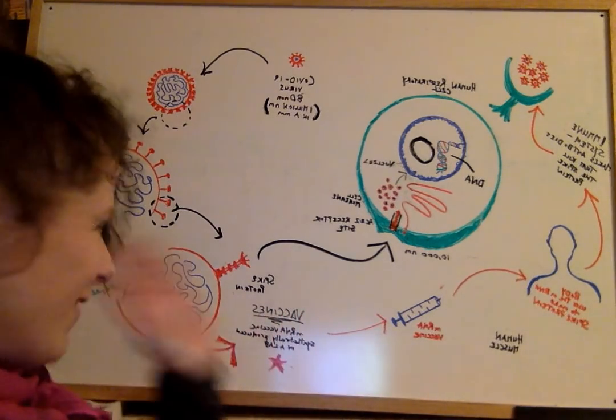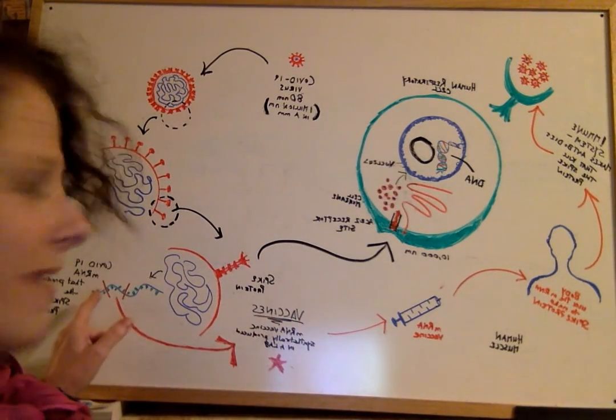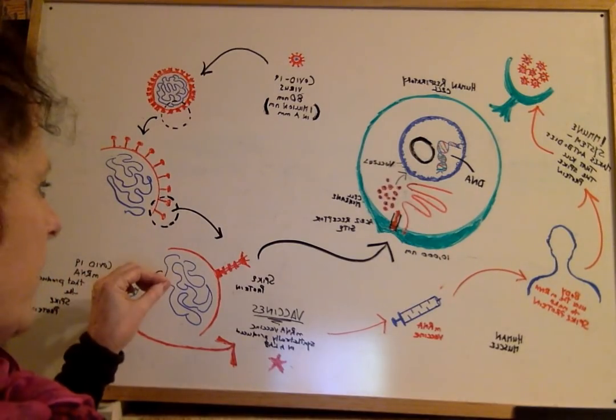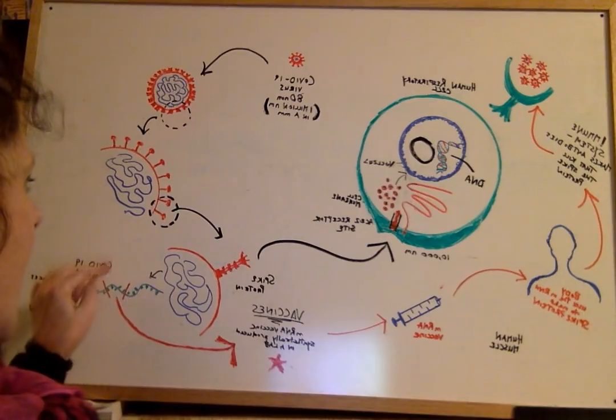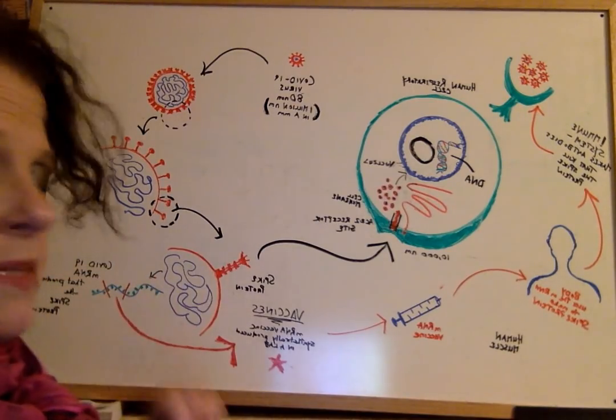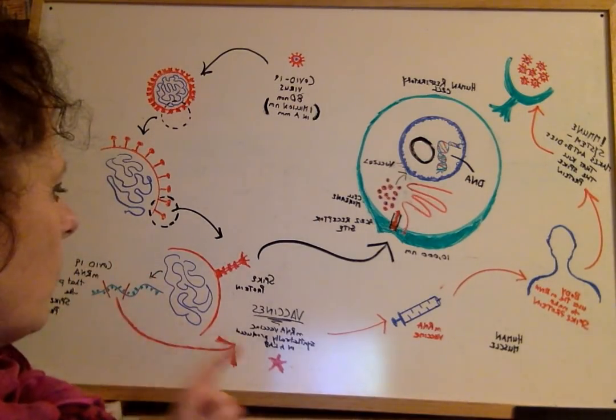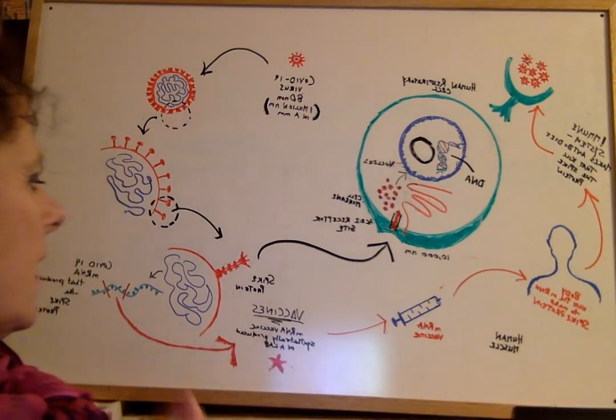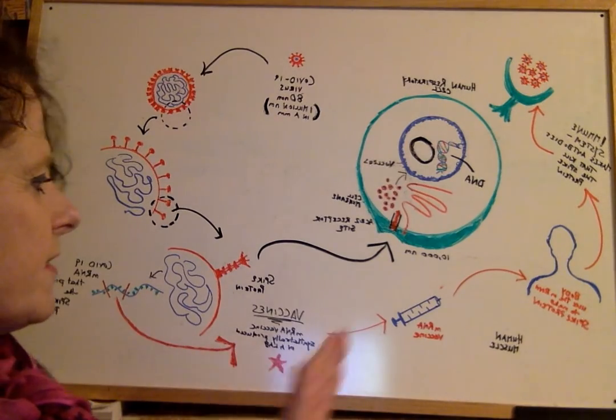I don't know how they did it, but 30 years of experience, they were able to take the messenger RNA of the COVID-19 virus that allows for the production of its spike protein and replicate it or synthetically reproduce it in the lab, put it into vaccines.